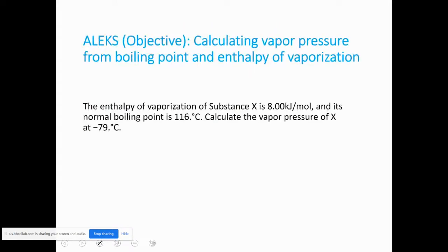The next problem is a trickier one from Alex. The enthalpy of vaporization of substance X is 8.00 kJ/mol, and its normal boiling point is 116°C. The question asks me to calculate the vapor pressure of liquid X at −79°C. A key hint: boiling point occurs when vapor pressure equals external pressure.